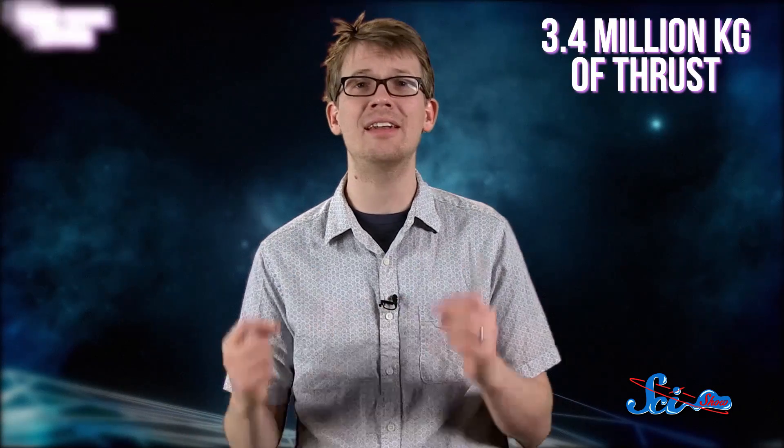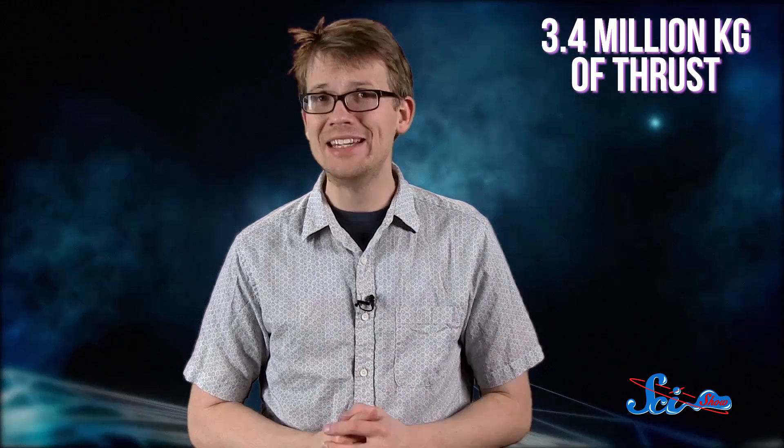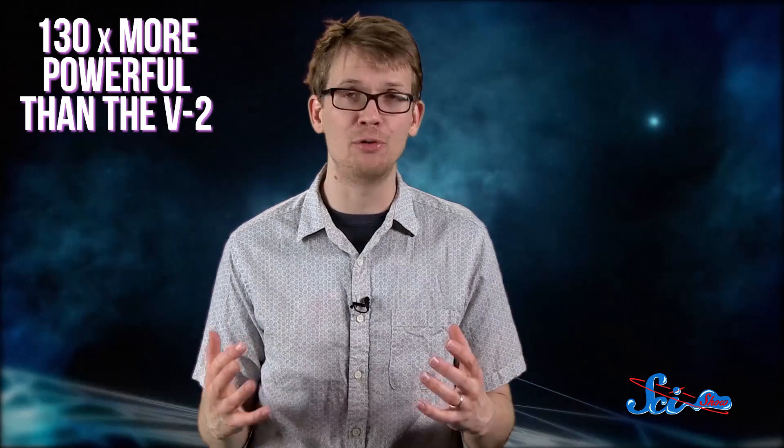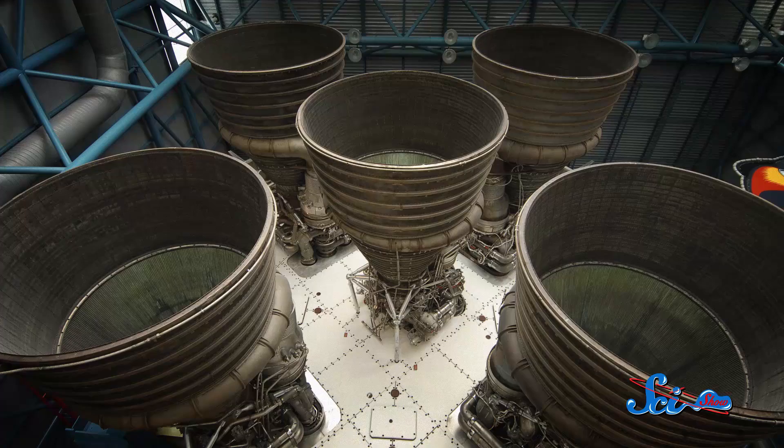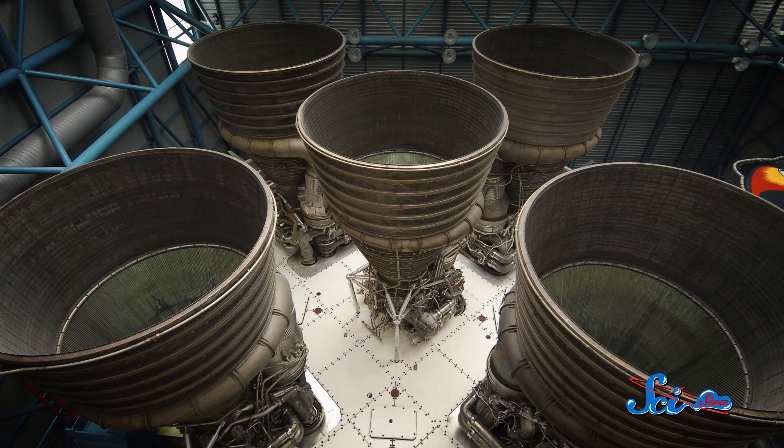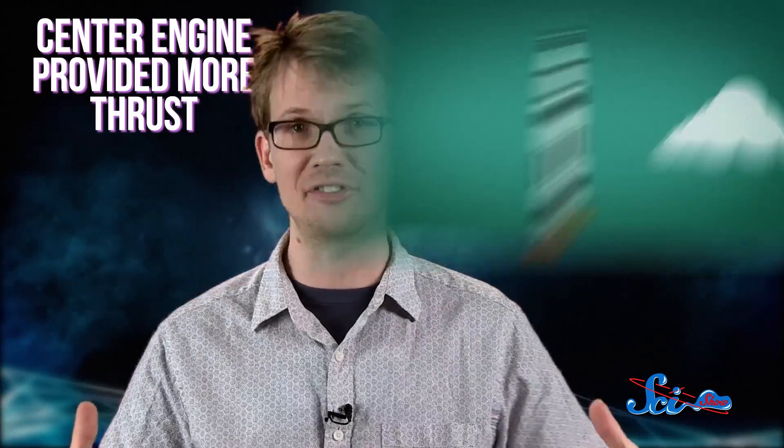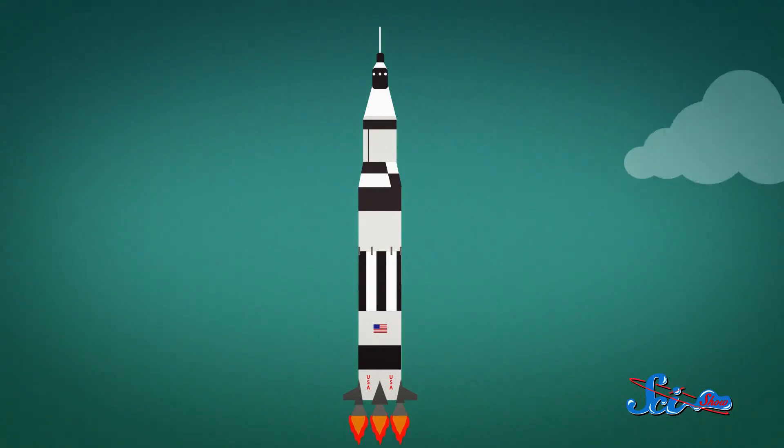The first of its three expendable stages produced 3.4 million kilograms of thrust, making it 130 times more powerful than the V-2. It had five separate F-1 engines, designed by von Braun's team, so that the outer four engines could move in order to control the direction of the rocket, while the center engine just provided more thrust.